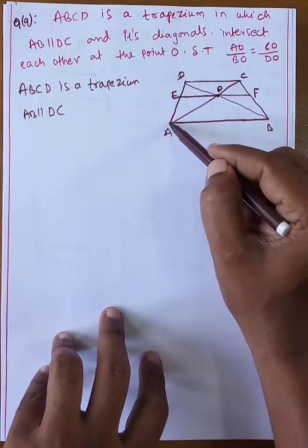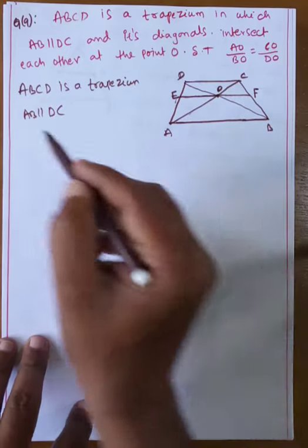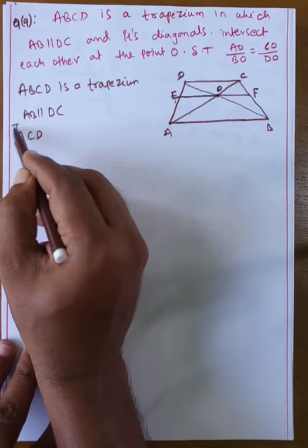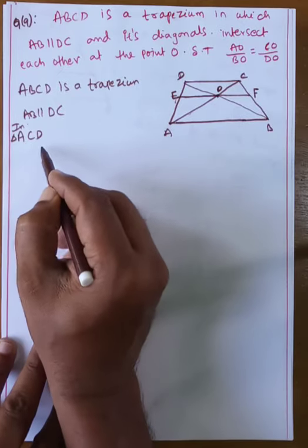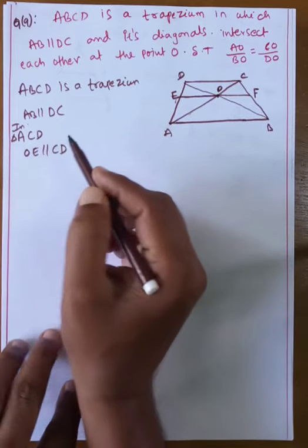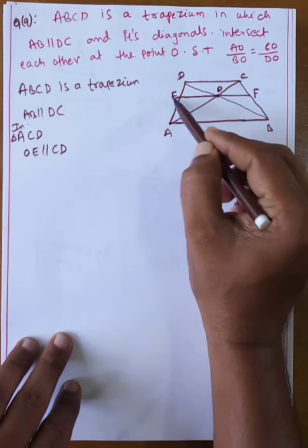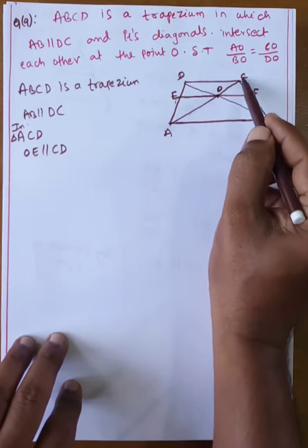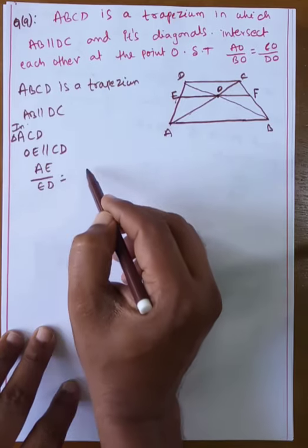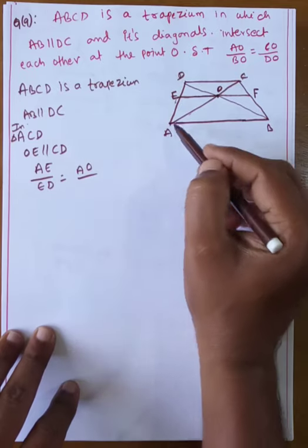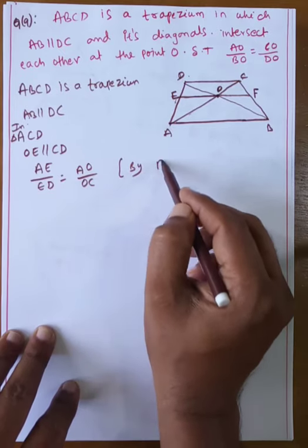In triangle ACD, OE is parallel to CD. By BPT, AE by ED equals AO by OC. This is equation number one.